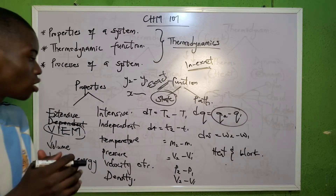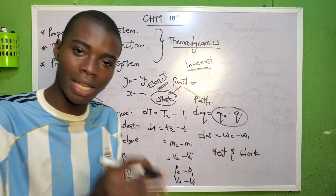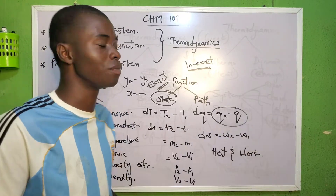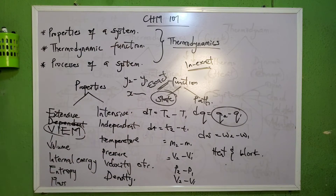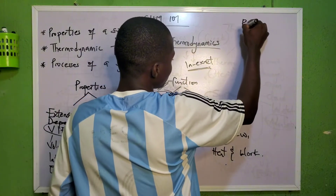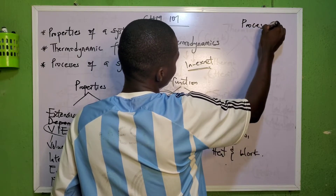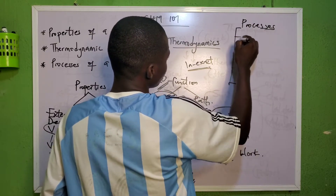Heat and work are path functions. Temperature, time, mass, volume, velocity, pressure — anything that has an initial and final value (P2−P1, V2−V1, etc.) is a state function. Its differential is exact, while the differential of a path function is inexact.